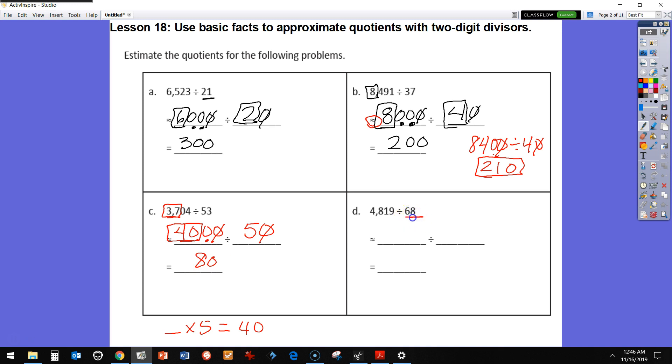Now I have 68 as my divisor, so that's going to go to 70. And here I have 48, but I know 49 is a multiple of 7. So I'm going to go up to 4,900. And I say, I can divide by 10, and I have what times 7 equals 49? I know it's going to be 7, but 7 what? 7 tens, because I have one zero remaining.